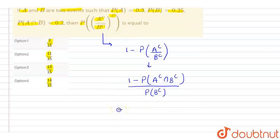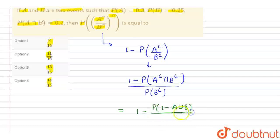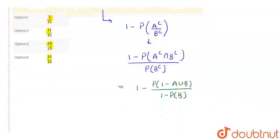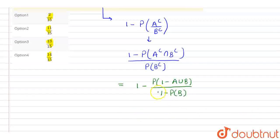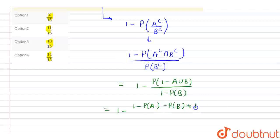So this can be written as 1 minus P(1 − A∪B) divided by (1 − P(B)). The probability of A union B is nothing but 1 minus (1 minus probability of A minus probability of B plus probability of A intersection B), and the denominator 1 minus probability of B remains as it is.